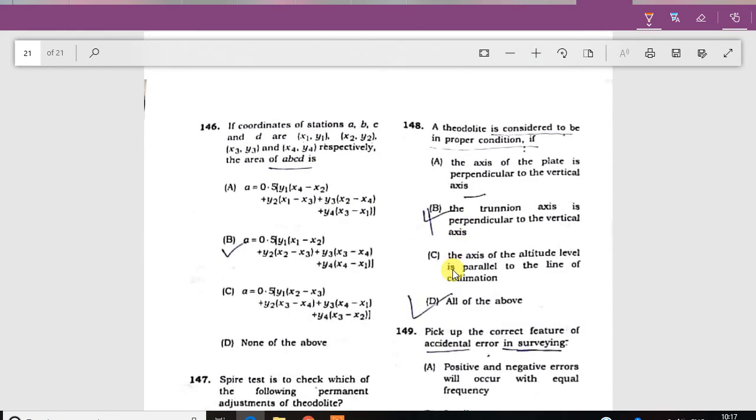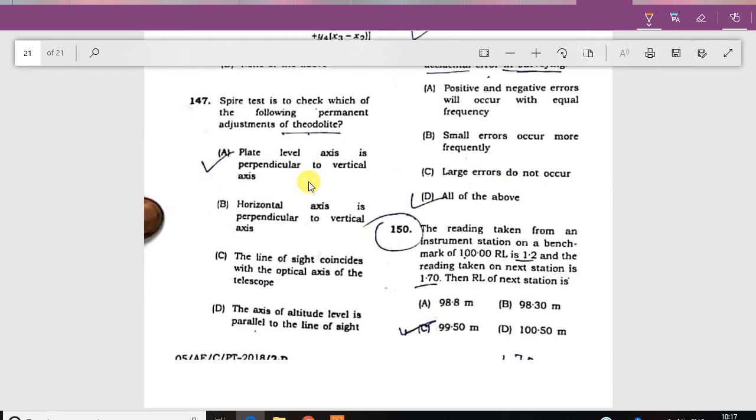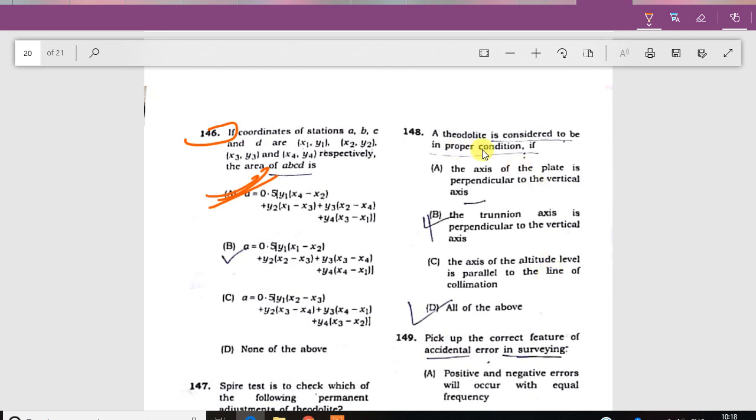Which of the following permanent adjustments of the theodolite: the horizontal axis is perpendicular to vertical axis. The theodolite is considered to be in proper condition when the plate axis is perpendicular to vertical axis, the premium axis is perpendicular to vertical axis.